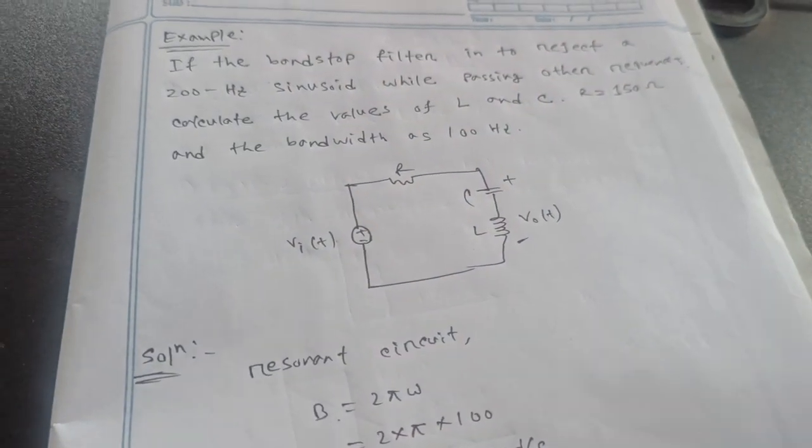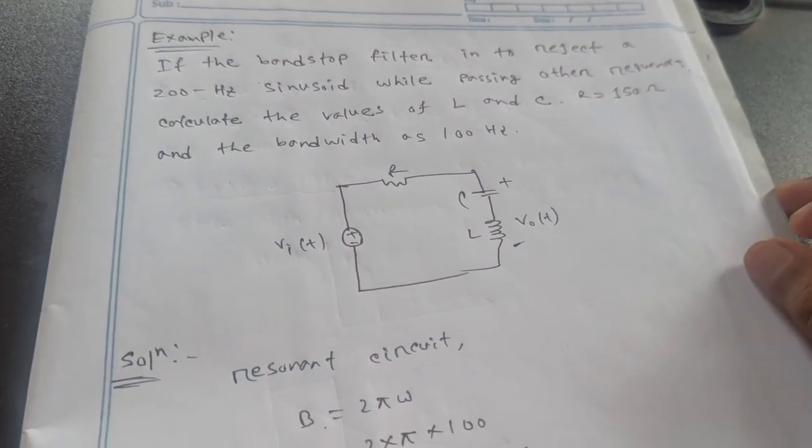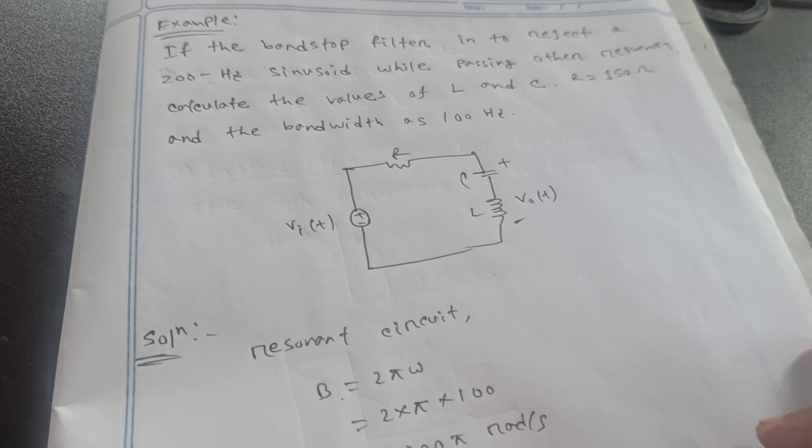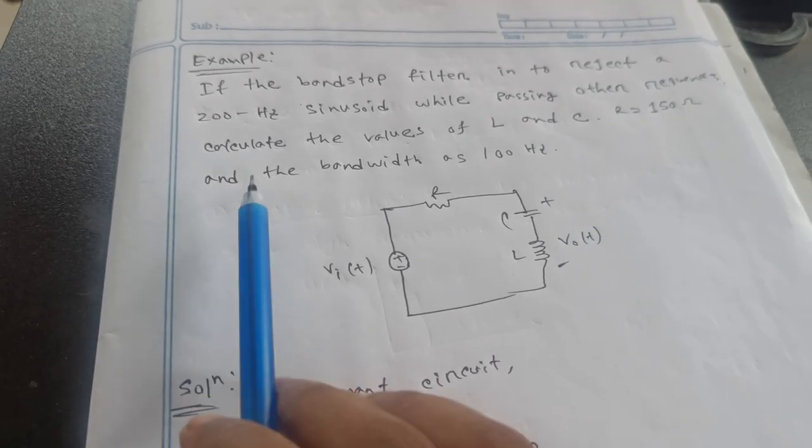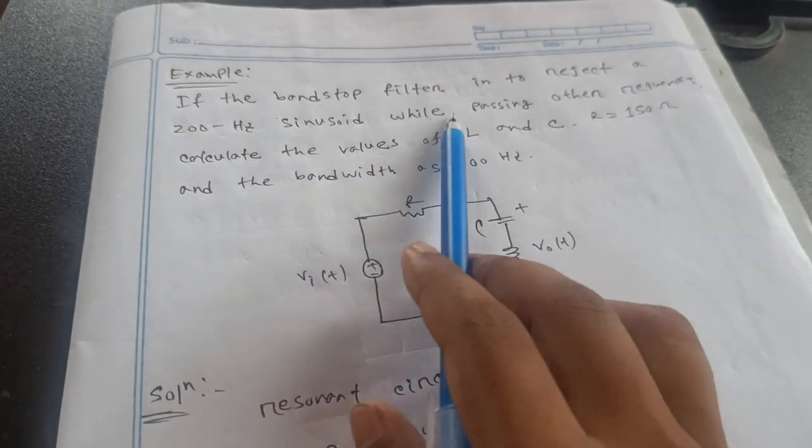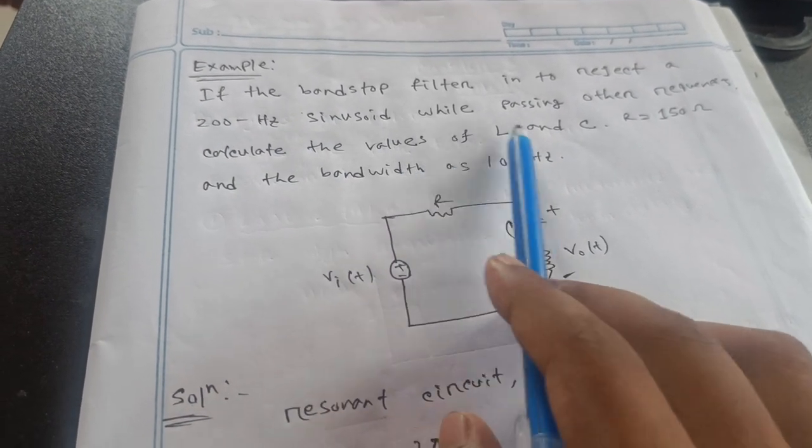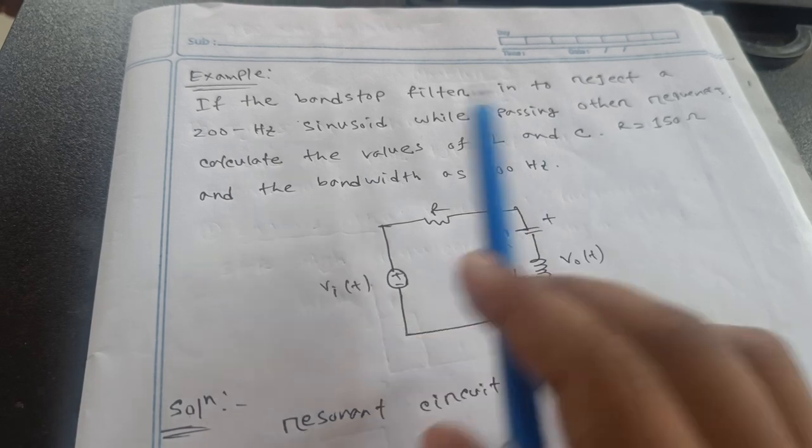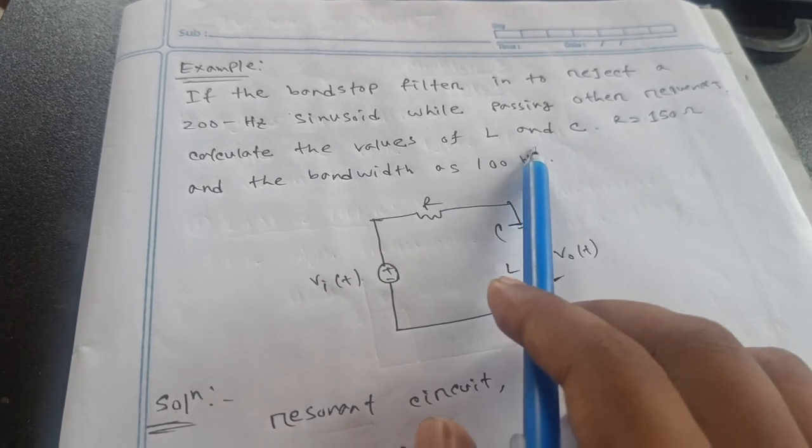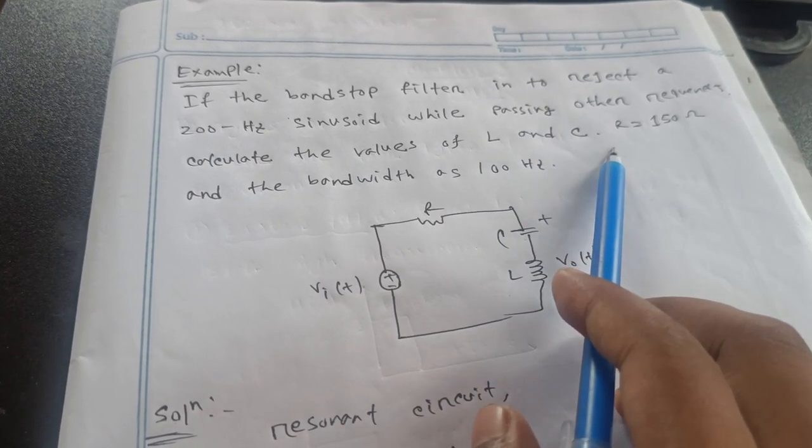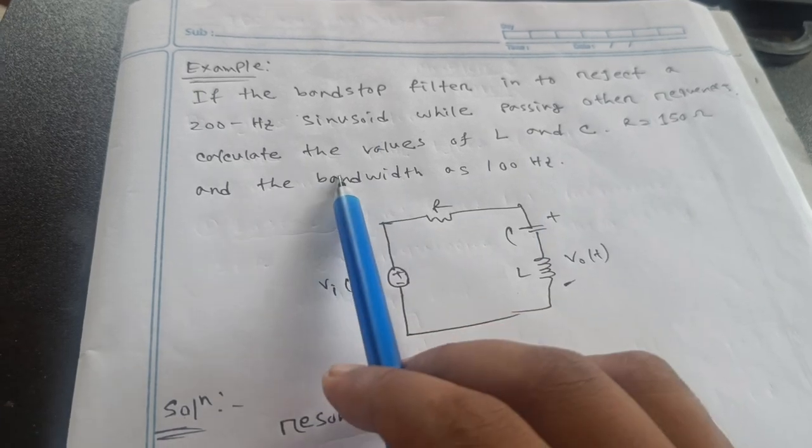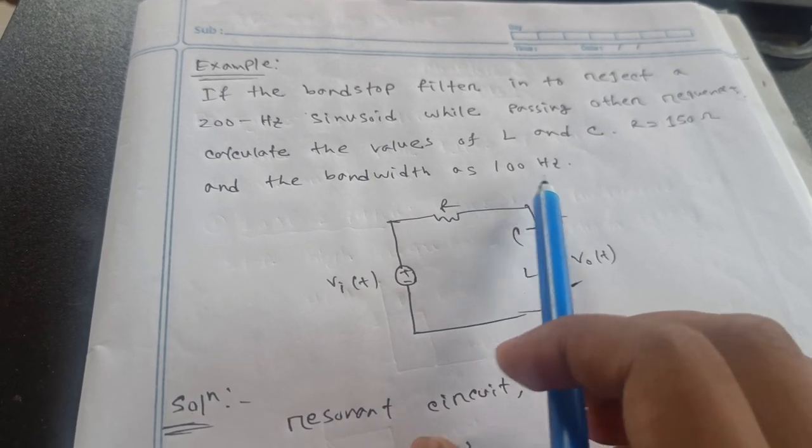Now I am solving the example. This will clarify the topic. If the band stop filter is to reject a 200 hertz sinusoid while passing other requests, calculate the value of L and C. That means R equals 150 ohm and the bandwidth is 100 hertz.